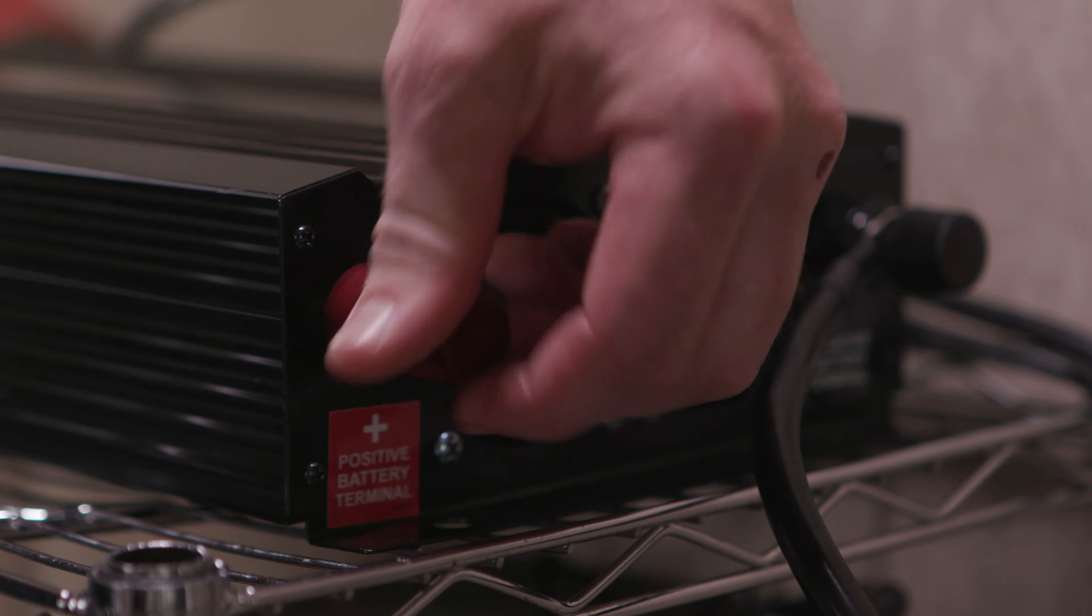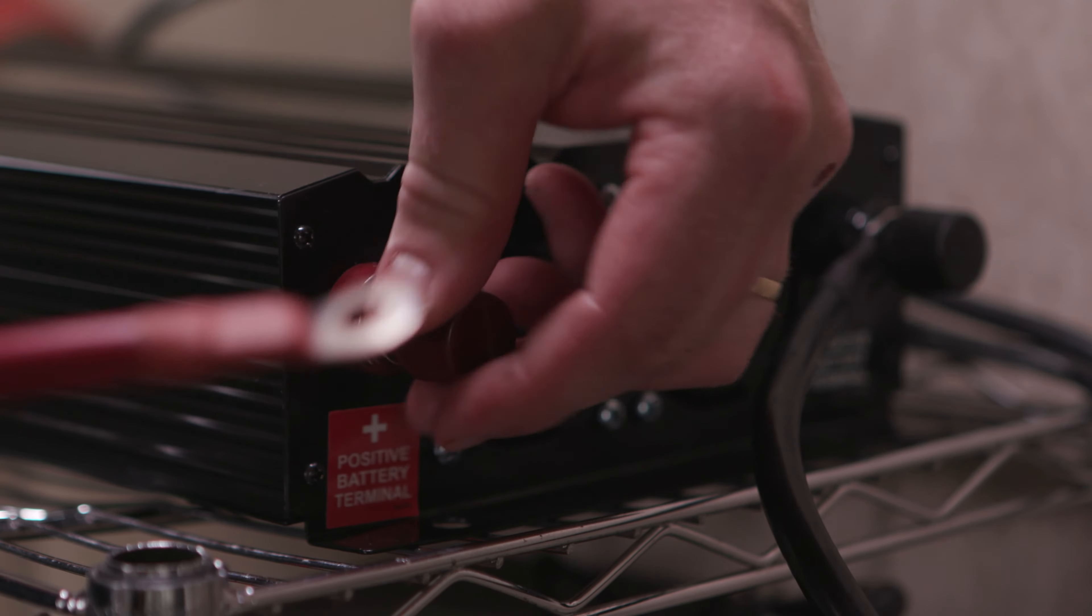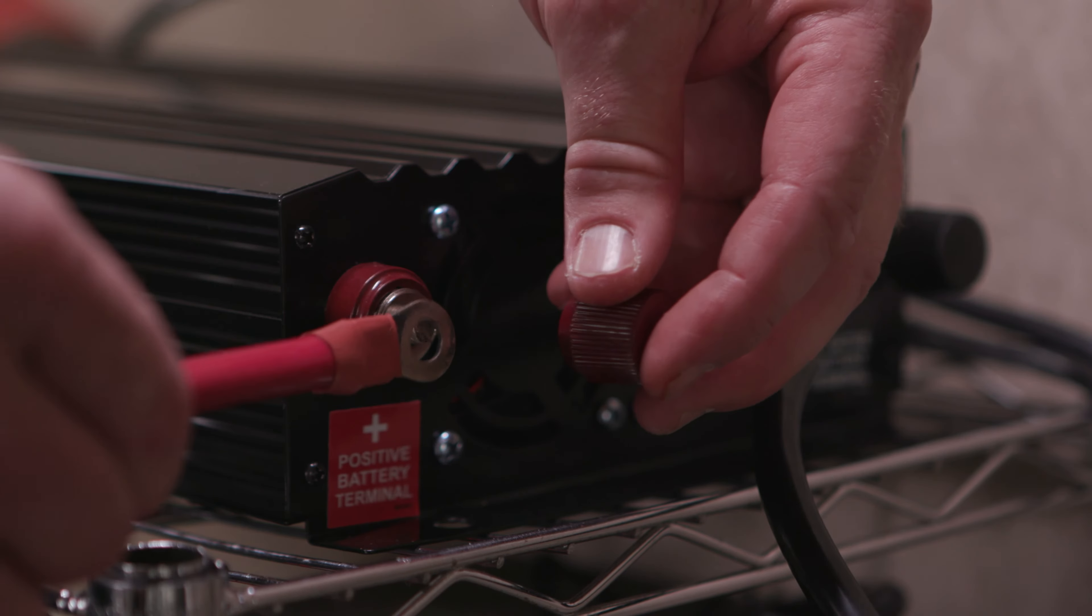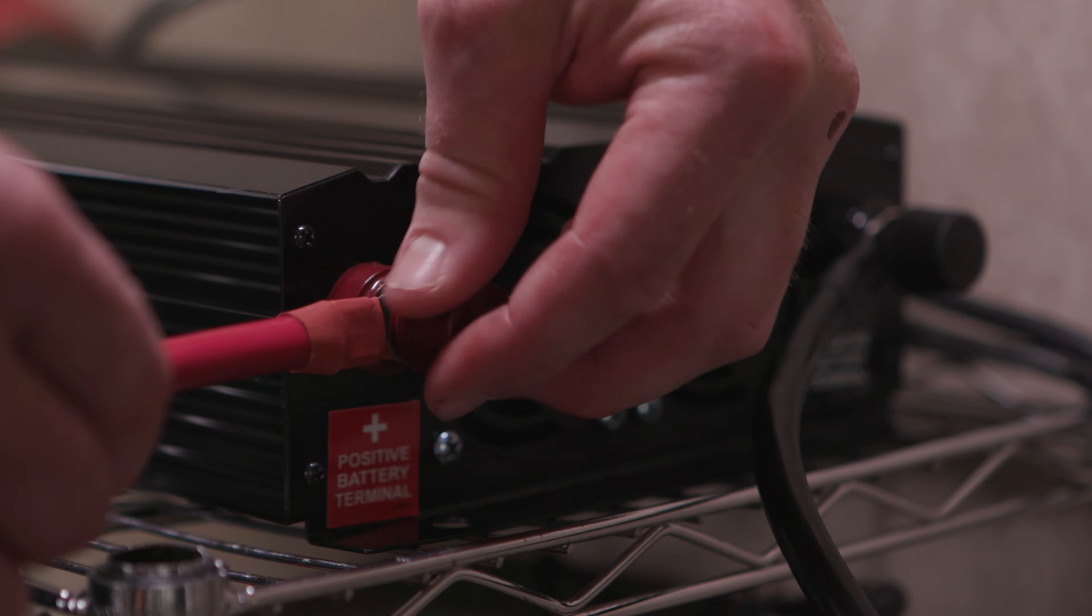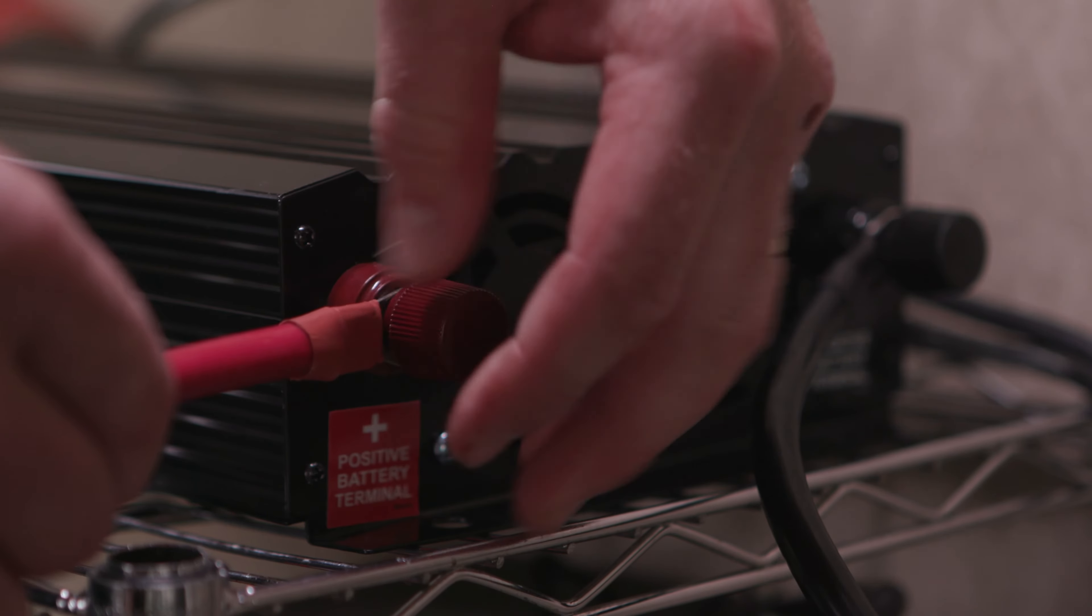Unscrew the terminal retention knobs on the backup power system. Connect the included battery leads to the backup power system. Tighten the terminal retention knobs by hand.